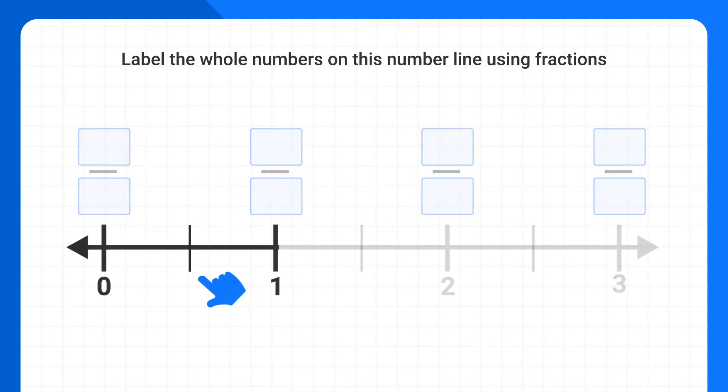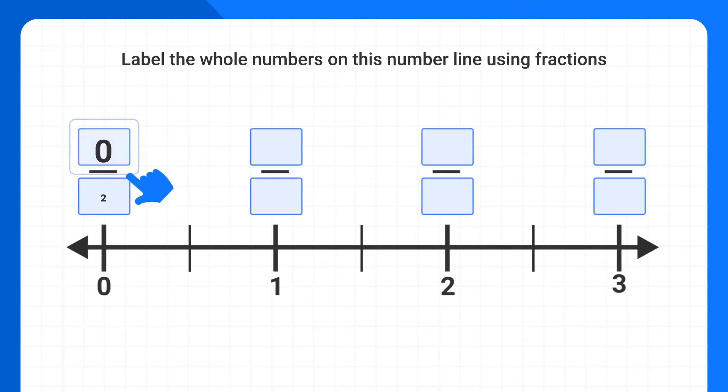If I look at just one whole of the number line, I can see that it's made up of 1, 2 pieces. So each of these are a half. Now once I know the number line is showing halves, I just start labeling. Right here at 0, that's 0 halves.